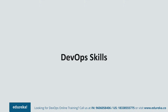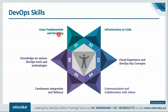Let's focus on various DevOps skills. A DevOps engineer should be proficient with Linux and should understand at least one scripting language. They should understand the concept of infrastructure as code, cloud experience is a must, and DevOps key concepts are very important — understanding the DevOps methodology, communication and collaboration with others, experience building continuous integration and delivery pipelines, and awareness of various DevOps tools like Git, Jenkins, Docker, Puppet, Chef, Ansible, Kubernetes, Nagios, and Selenium.